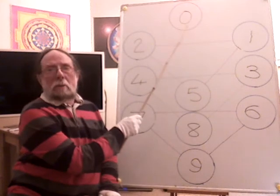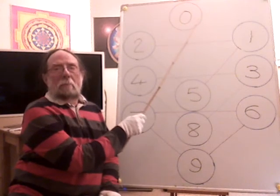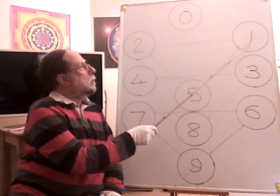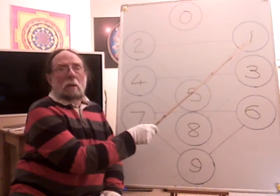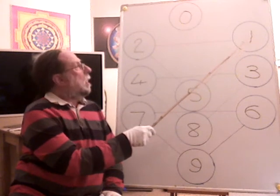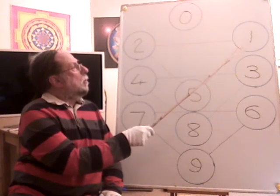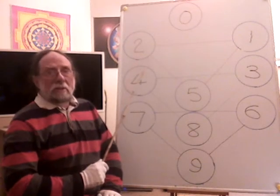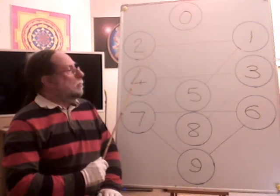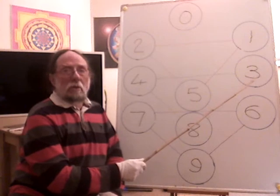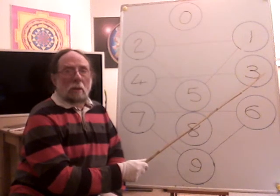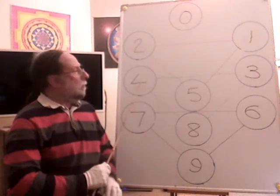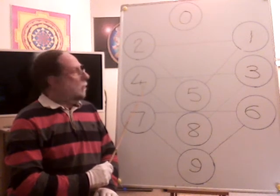We have a point, which is zero dimension, and the point moves and we get a line, the first dimension. And then the line moves at right angles and you get a plane, the second dimension. The two dimensions move at right angles and you get the third dimension, space. The third dimension moves and we get time, the fourth dimension.